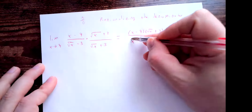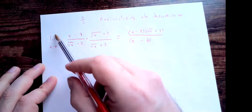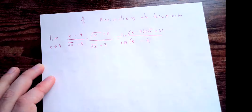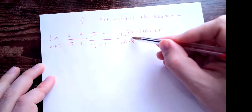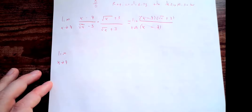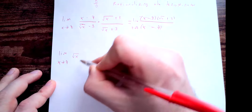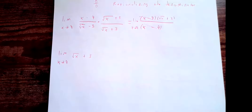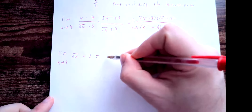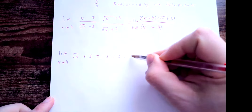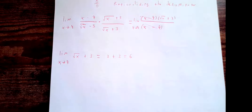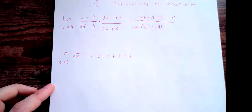Now — making sure to still write the limit as x goes to 9 — I can cancel the (x − 9) factors in numerator and denominator. This leaves the limit as x goes to 9 of (√x + 3). No indeterminate form now; I can plug in 9 to get 3 + 3 = 6. So the limit of (x − 9)/(√x − 3) as x goes to 9 equals 6.